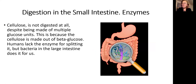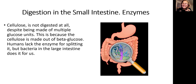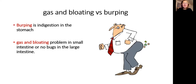In the large intestine, bacteria help break down cellulose. If you don't have adequate bugs, you will also become gassy and bloated. It's important to understand that not only a deficiency of enzymes in the small intestine can cause gassiness and bloating — the problem could also be in the large intestine. So now we're moving into differential diagnosis: you need to understand where the gassiness and bloating is coming from.